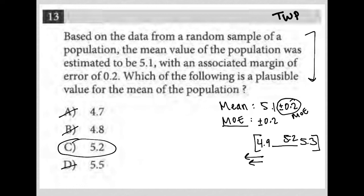And then 5.5 is also a no, because it is greater than the parameter for our margin of error. So, our answer choice here, that's correct, is choice C.